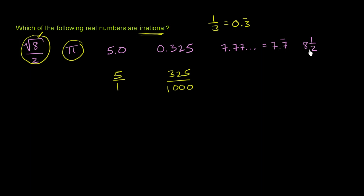8 and 1/2? Well that's the same thing. 8 and 1/2 is the same thing as 17 halves. So it's clearly rational. So the only two irrational numbers are the first two right over here.